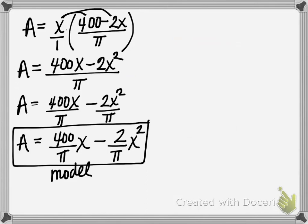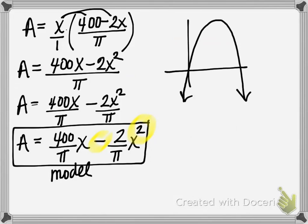Thinking graphically, without a calculator, we note this function has degree 2, so it's quadratic — a parabola. Because the leading coefficient is negative (−2/π), the parabola opens downward. So if we sketch area on the vertical axis and X on the horizontal axis, the maximum area occurs at the vertex — the high point of the downward-opening parabola. The vertex gives us an X-coordinate and a corresponding maximum area coordinate.